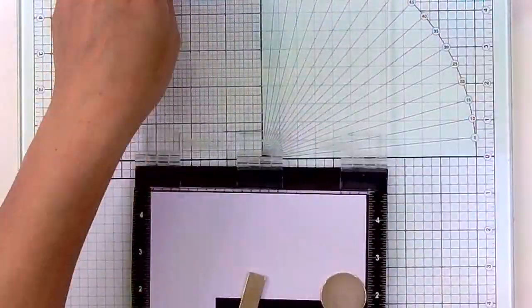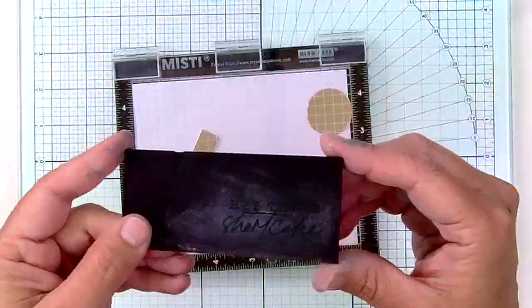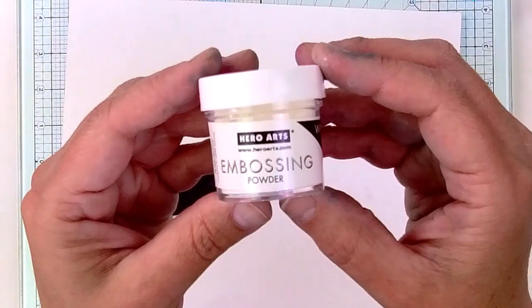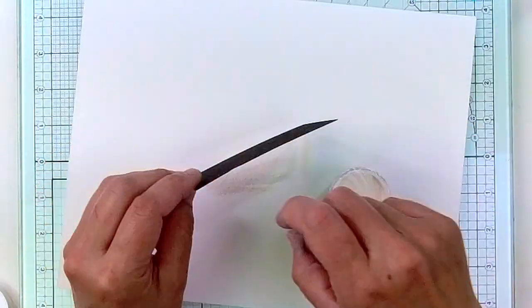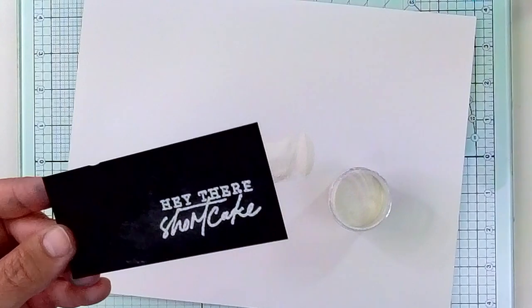I'm going to heat emboss this on black, so I've used an anti-static powder tool, and you can see there's a lot of powder in the background, and I'm going to use white embossing powder and heat set it.